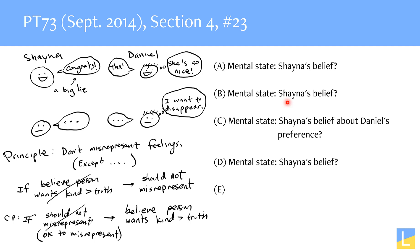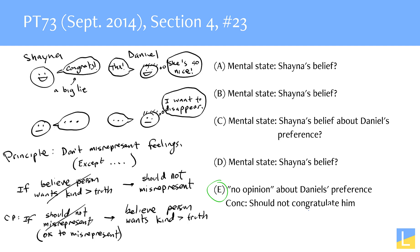If you really understood 'belief,' you could actually pick answer choice E because E is the only one that gets at Shana's belief about Daniel's preference. E says that Shana has no opinion about whether Daniel would prefer kindness to honesty. So if she has no opinion about what Daniel prefers, that means she does not believe he wants kindness over truth. No opinion about what he wants means I don't know what he wants — and if I don't know, I certainly don't believe that he wants kindness over truth. Maybe he does want kindness over truth, but she doesn't currently believe that he does. That's why we can reach the conclusion in answer choice E that she should not congratulate him — she should not misrepresent her feelings.